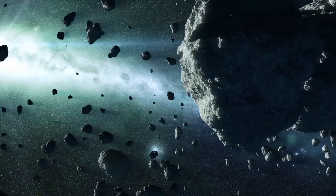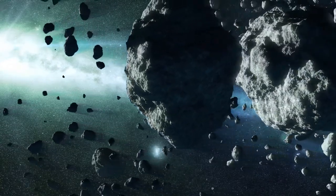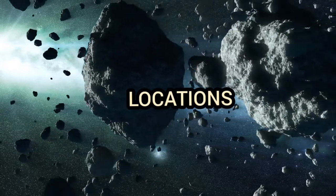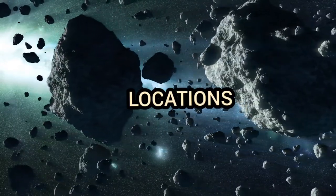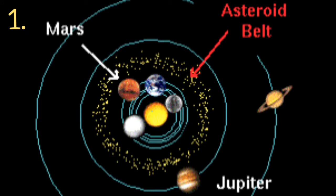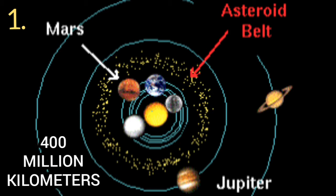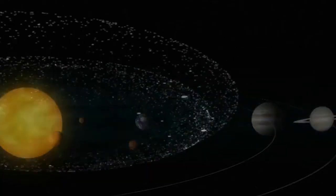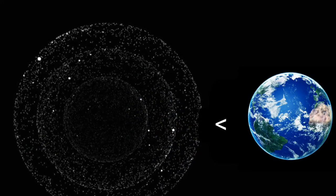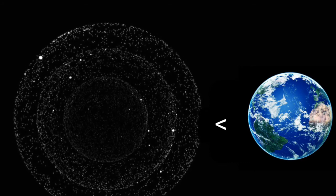Now let us go deeper and look at asteroids in detail. First, let us look at where asteroids are found. There are some asteroids found in the asteroid belt, which is outside Mars's orbit. It is about 2.7 astronomical units, which is roughly about 400 million kilometers in distance. The total mass of all materials in the asteroid belt is less than the mass of the Earth.